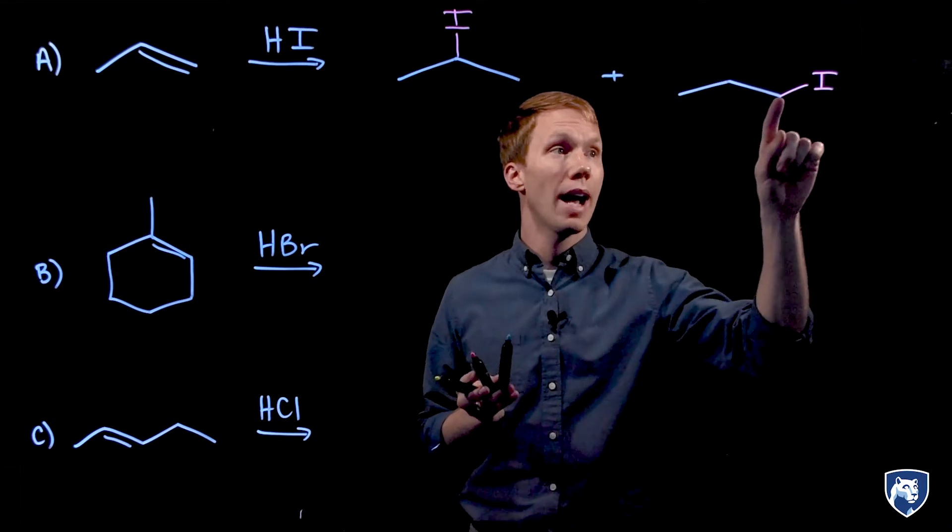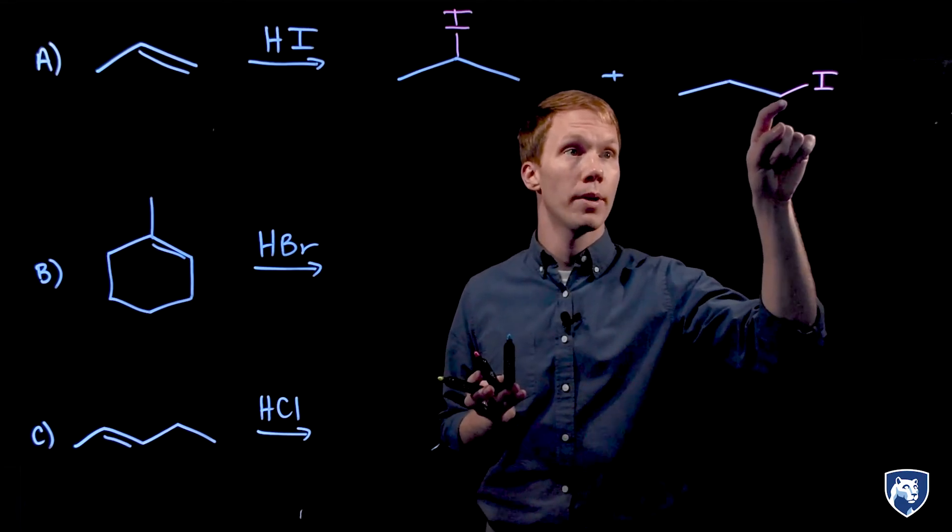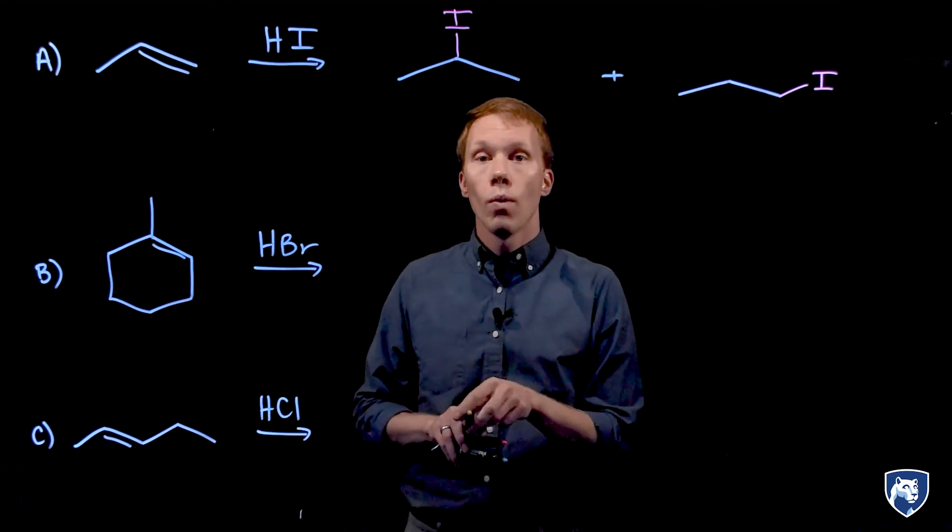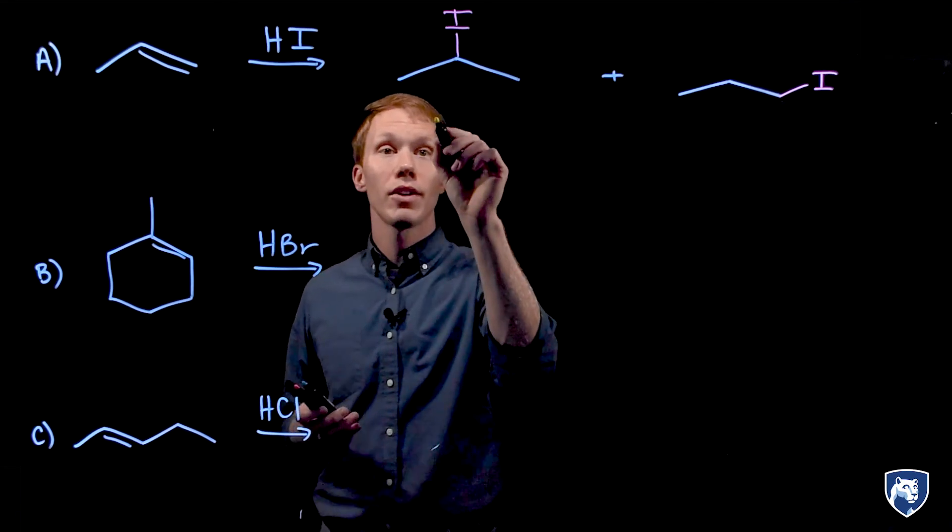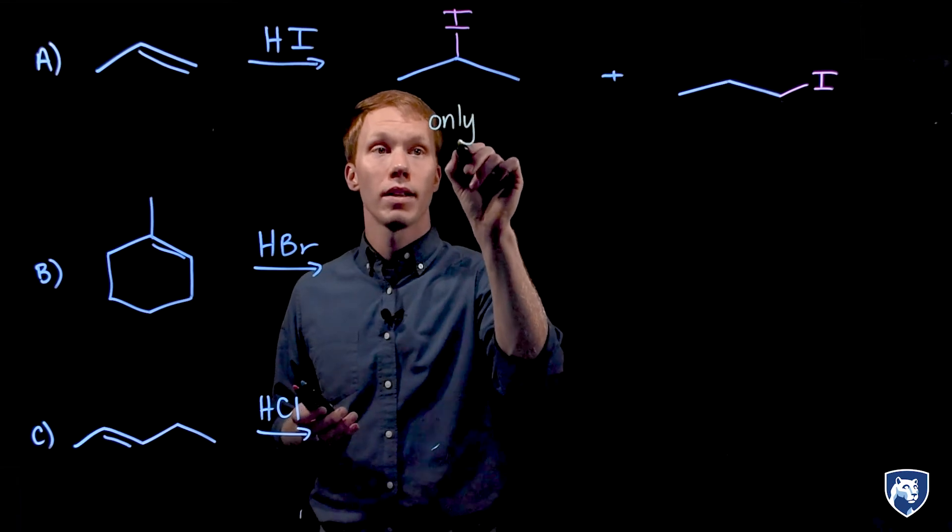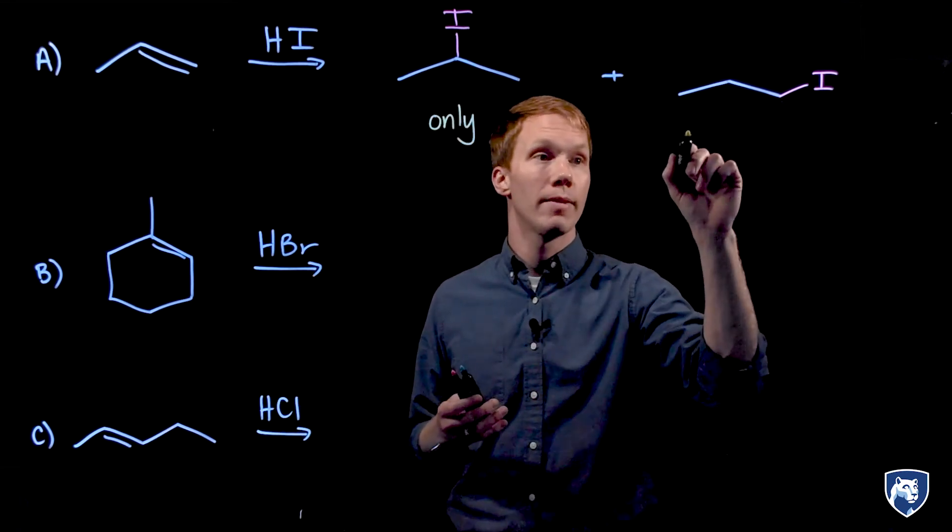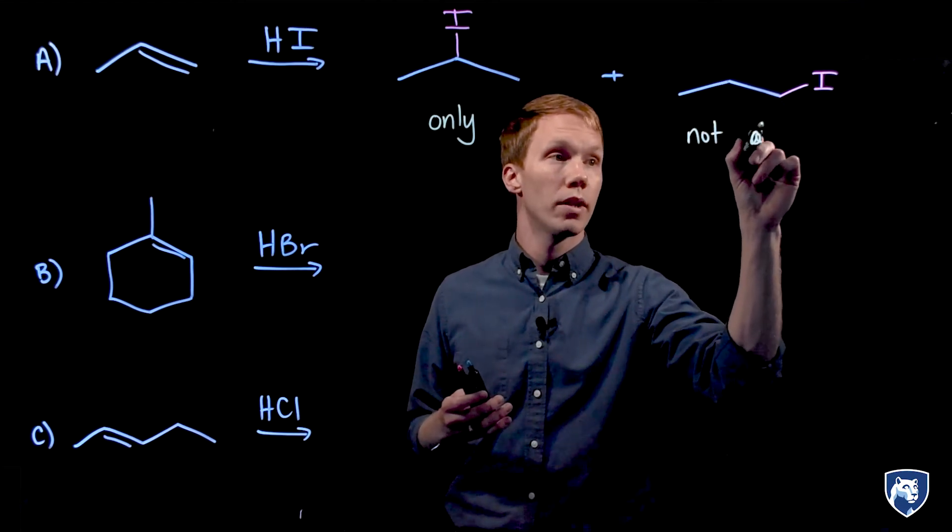Alternatively, I can add the iodine to the less substituted carbon, the primary carbon, and the hydrogen to the secondary carbon. When we isolate our products in the lab, we find that there is only one product. This is the only product observed, the secondary alkyl iodide. The primary alkyl iodide is not observed.